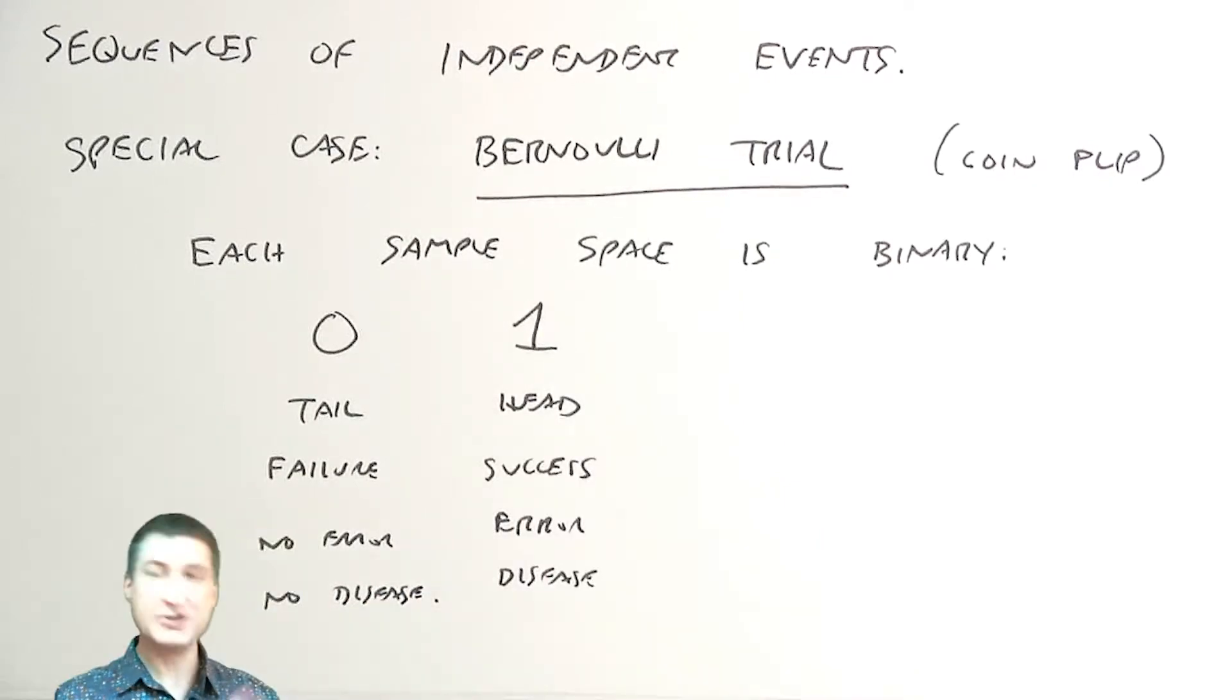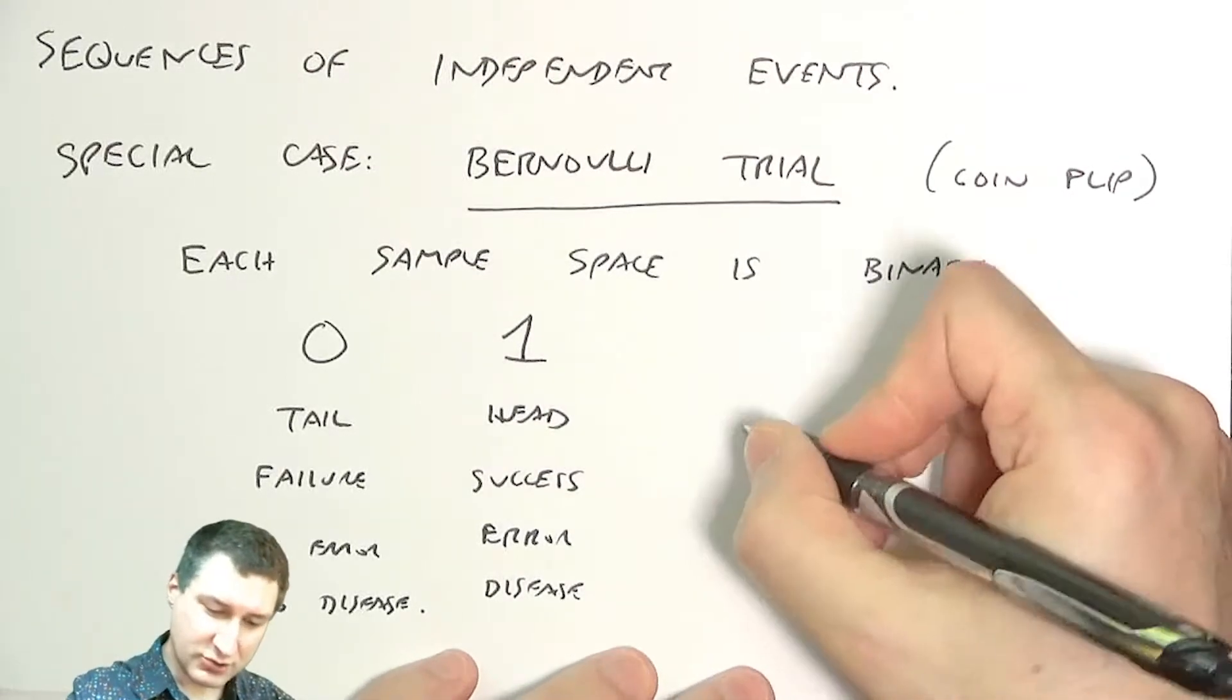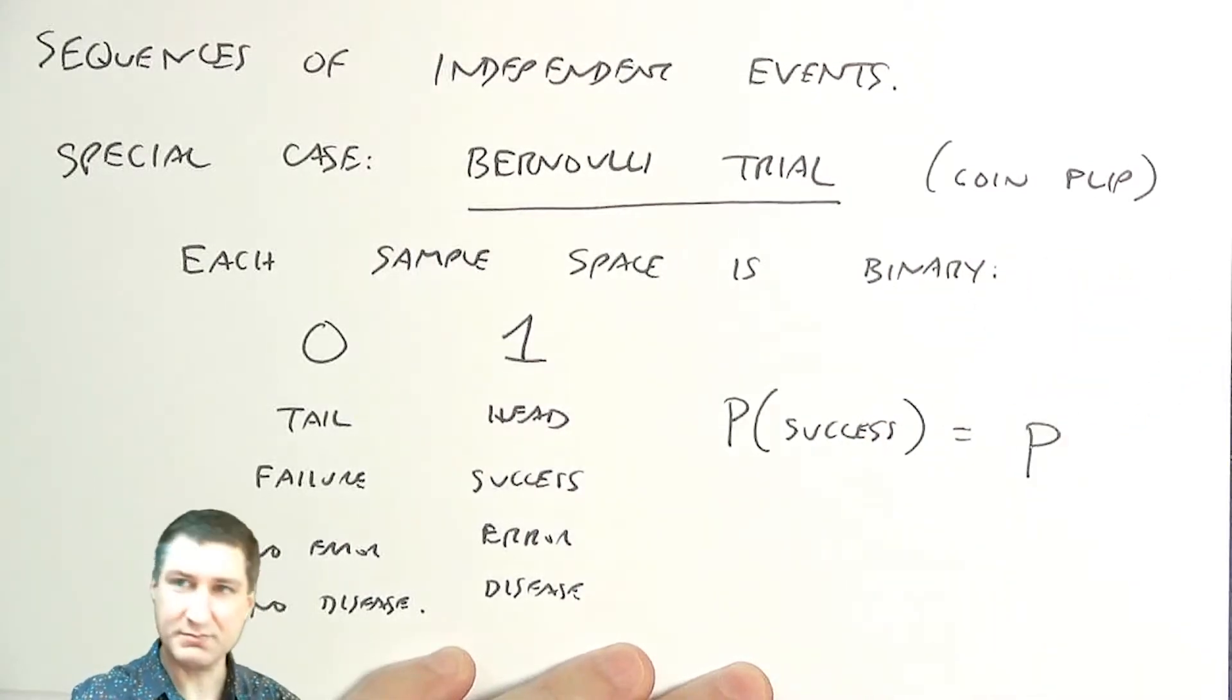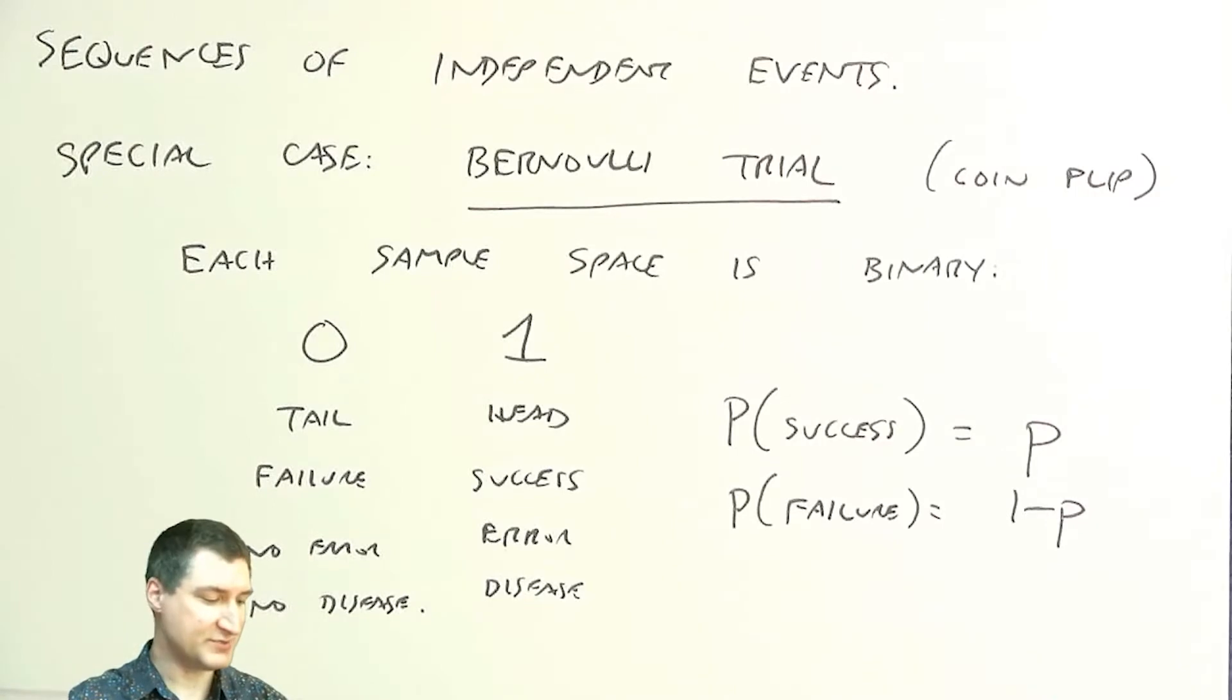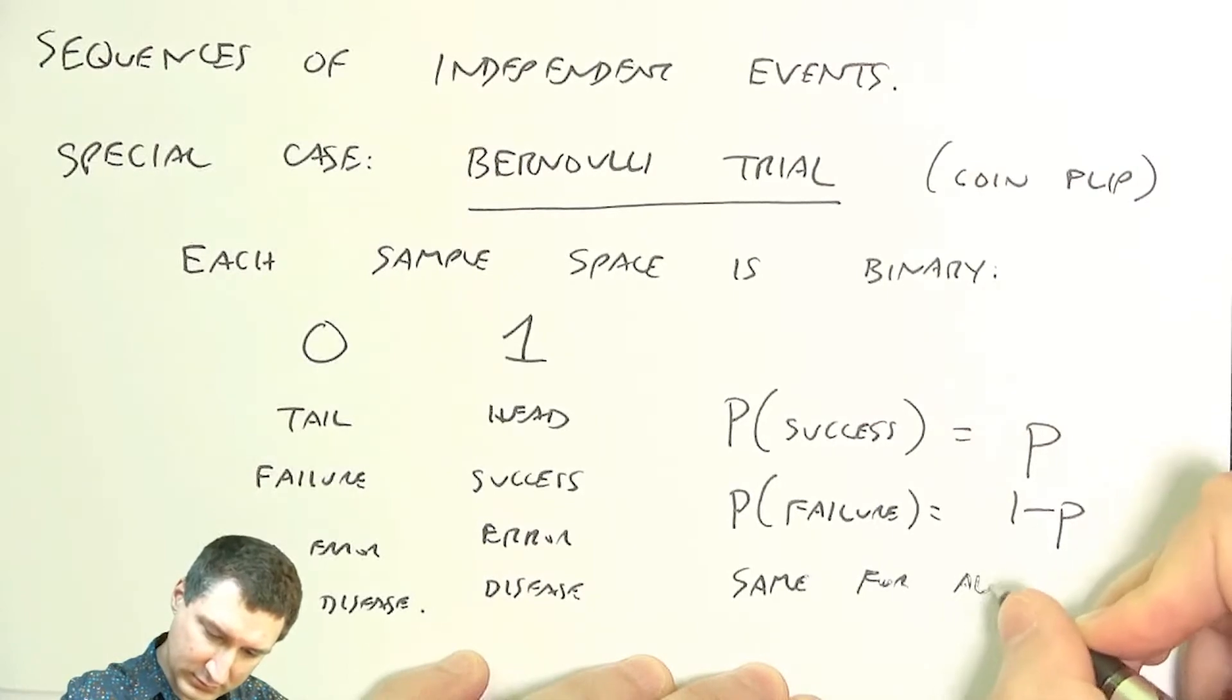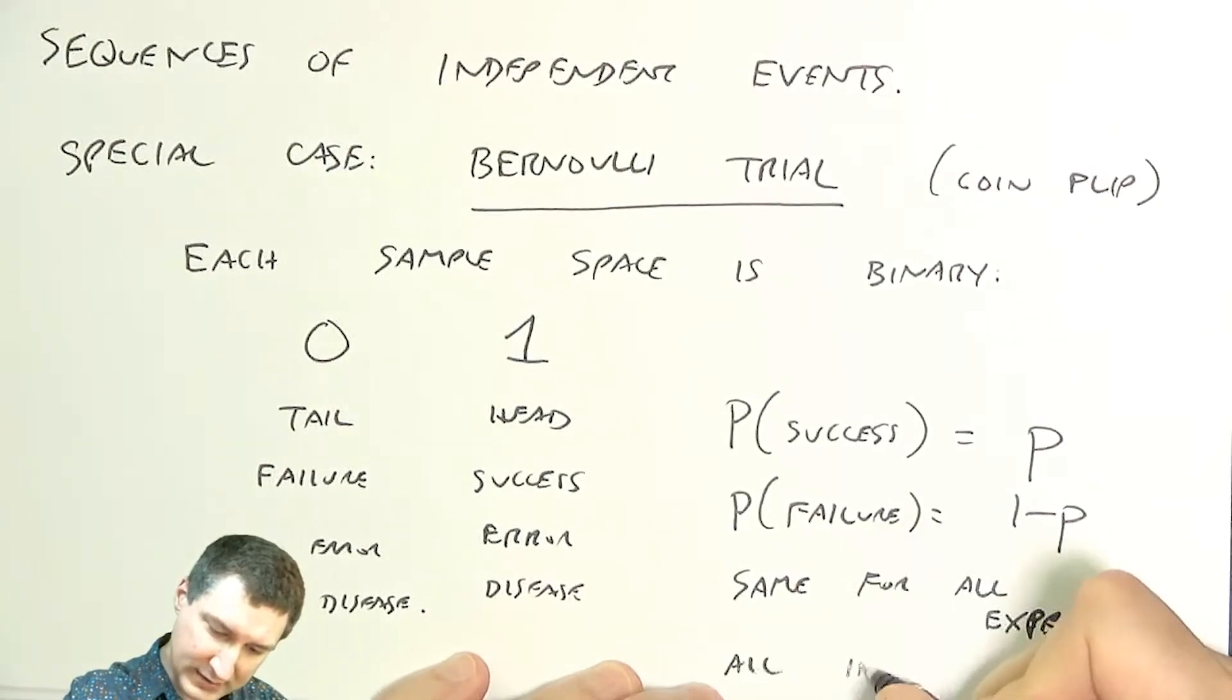The underlying assumption is that I do a sequence of these experiments and every outcome is independent with all the previous outcomes. We assume that the probability of success is some number p, which means the probability of failure is one minus p. Those two possibilities carve up the whole sample space, and that's the same for all experiments, and they're all independent.